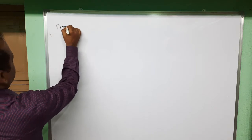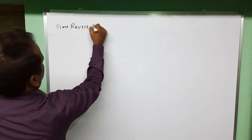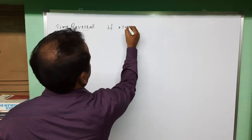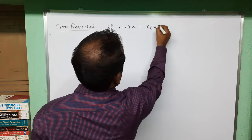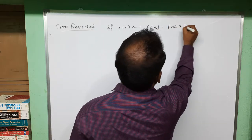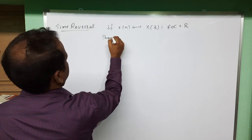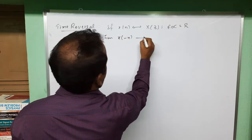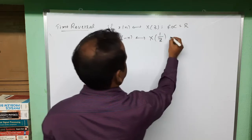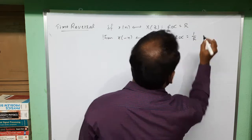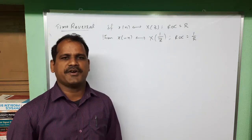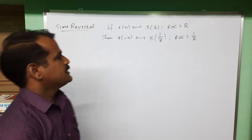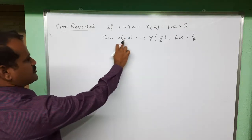Good morning students. In this video we are going to prove the time reversal property of the Z-transform. The statement is: if X(n) has Z-transform X(Z) with ROC R, then the Z-transform of X(-n) is X(1/Z) with ROC 1/R. This is the statement of the time reversal property of the Z-transform that we are going to prove. For the left-hand side, if we take the Z-transform of X(-n), we should finally get X(1/Z).